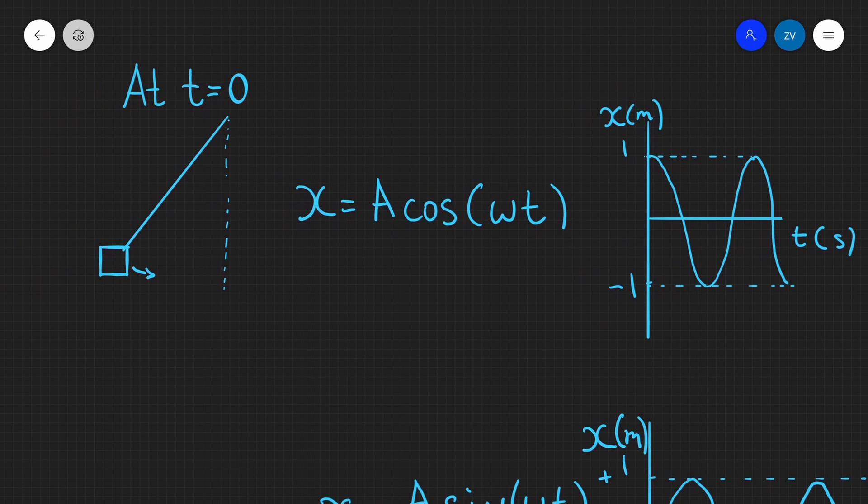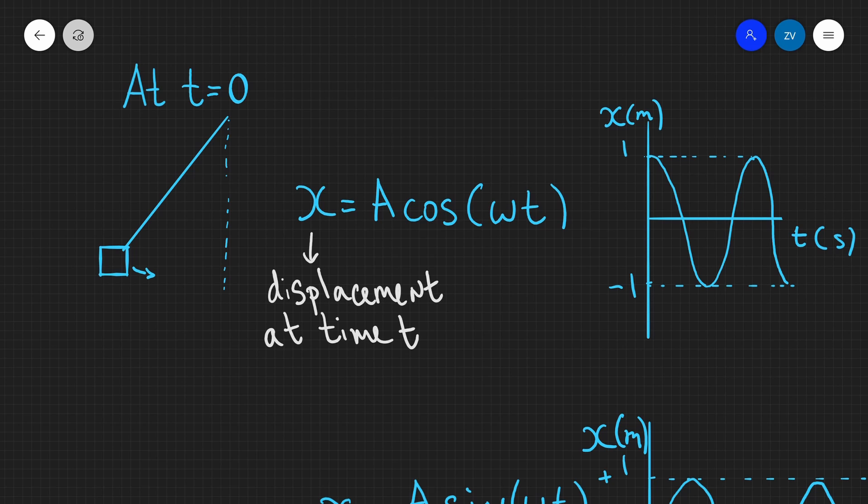Now in this equation, it's really important: x is our displacement at time t. So it's not a constant, it will be constantly changing. It will be going from, in this case, 1 to minus 1, and it will be zero at some point as well.